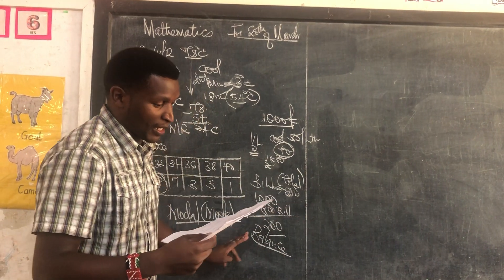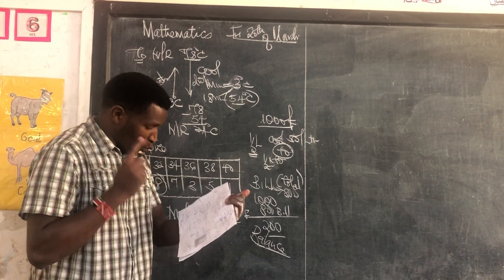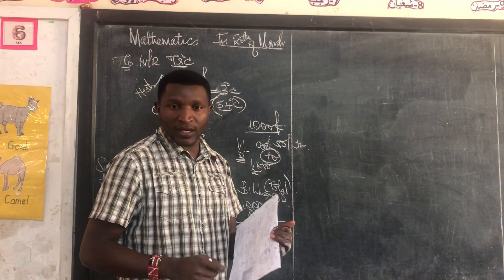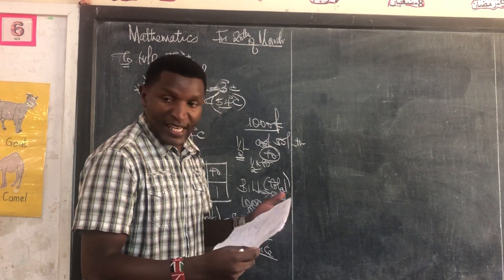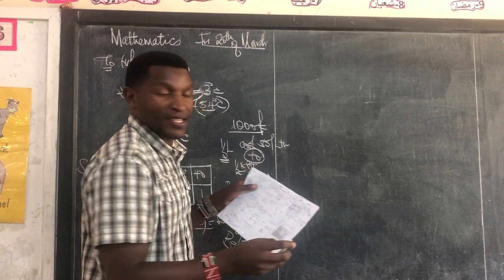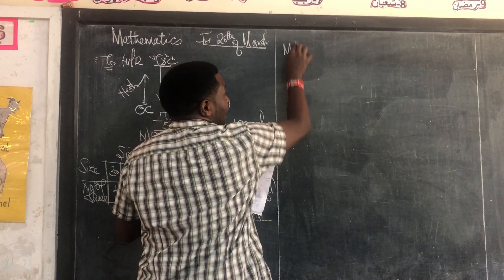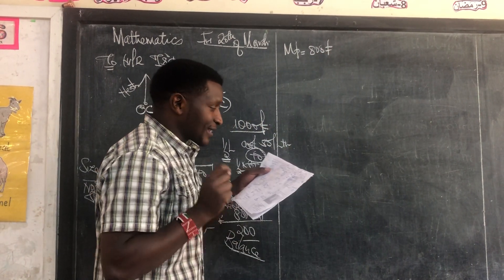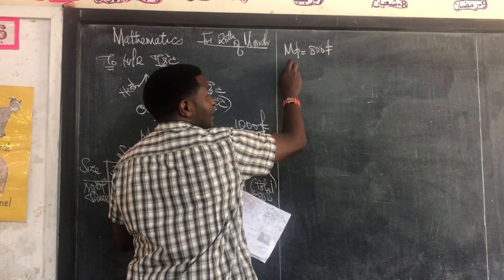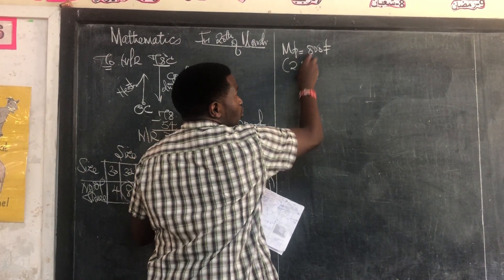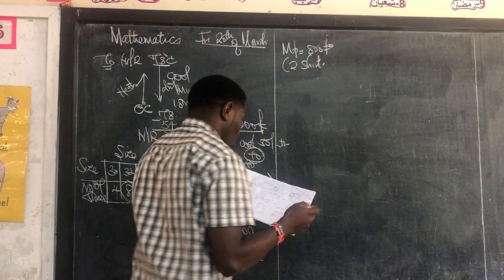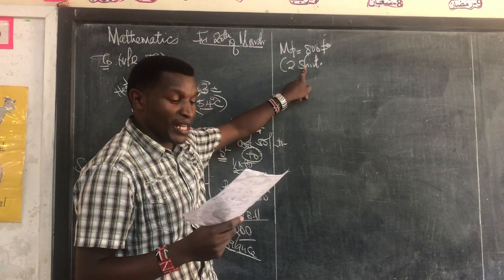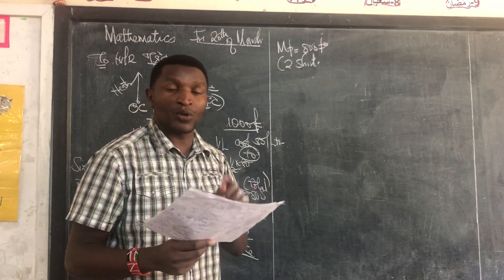That's number 39. Then we go to number 41. I do not know why people were not able to answer this question correctly. It says the market price of a shirt is 800 shillings. Sarumbe bought two shirts after being given a discount of 2.5%.